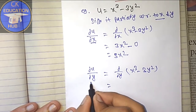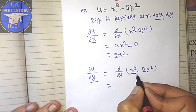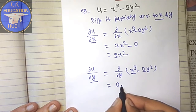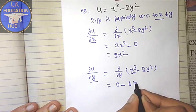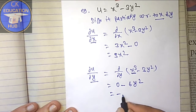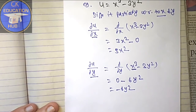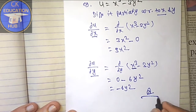In this case, we will consider x as a constant, so the derivative of x³ with respect to y is 0, and the derivative of -3y² is -6y. So del u / del y = -6y is the answer.